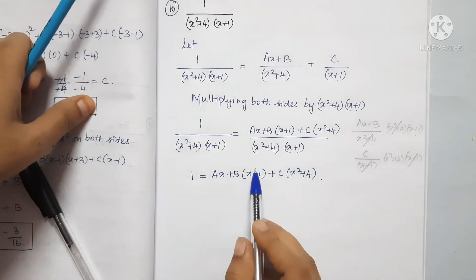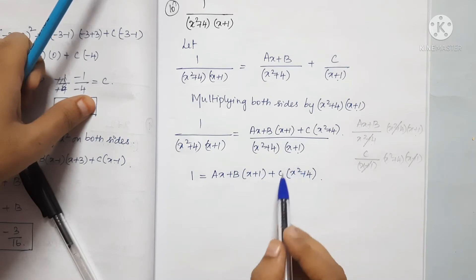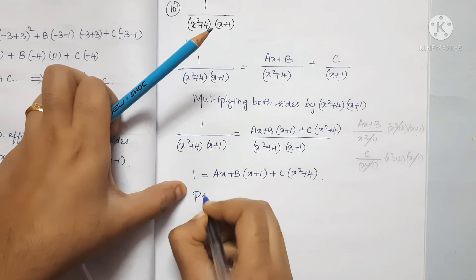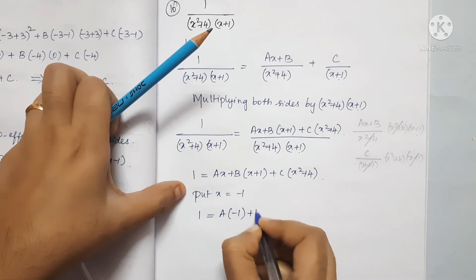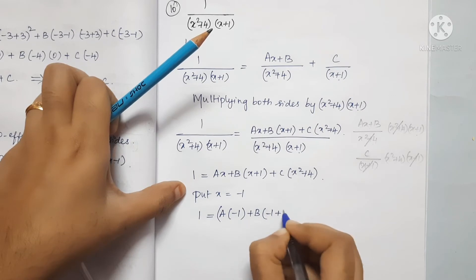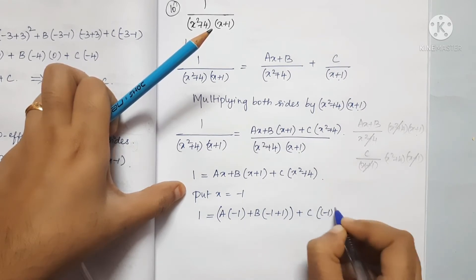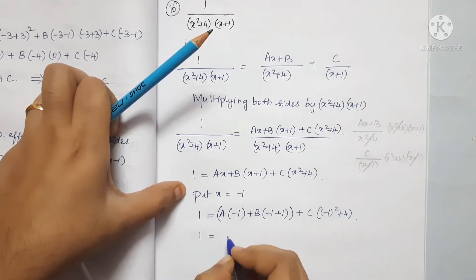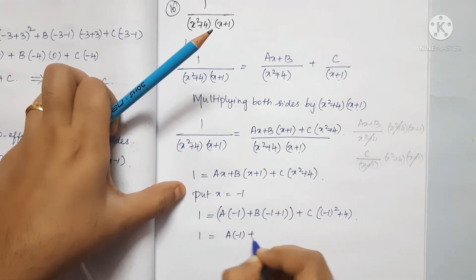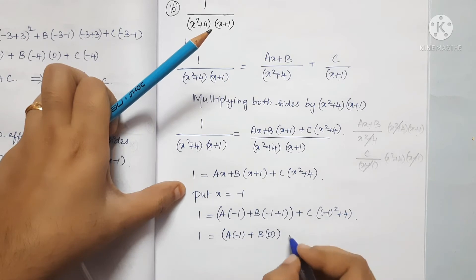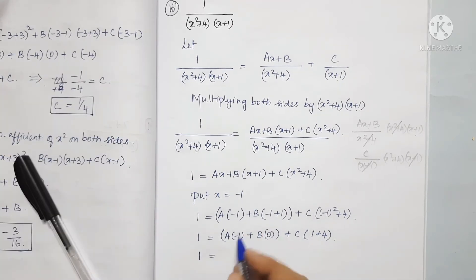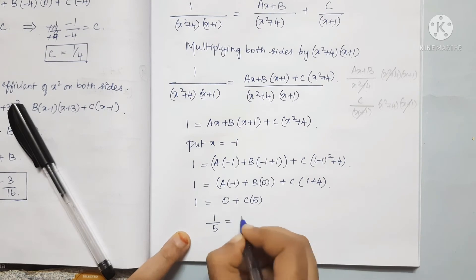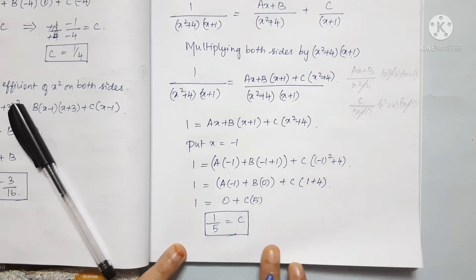To find C, we substitute x equals minus 1. Then (x plus 1) becomes 0, so that term vanishes. We get: 1 equals C times (minus 1 squared plus 4), which is C times 5. Therefore C equals 1 divided by 5.